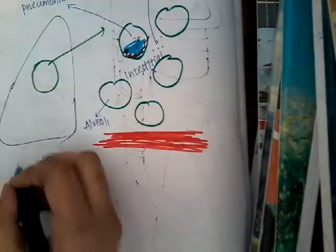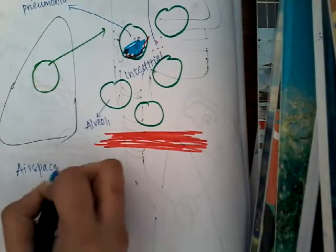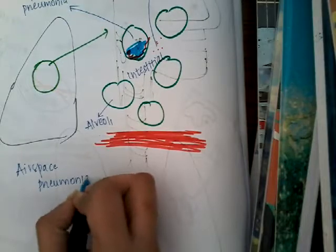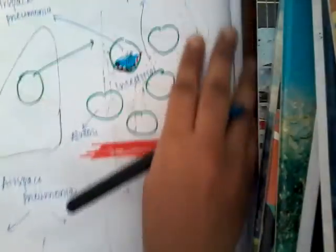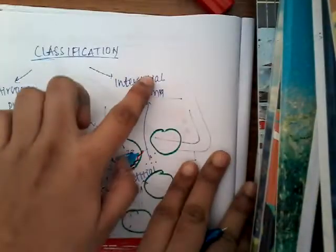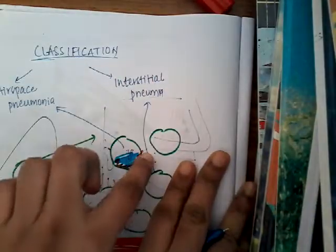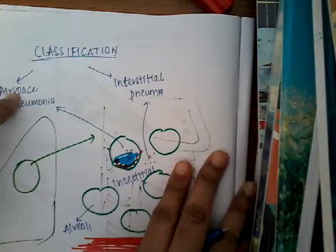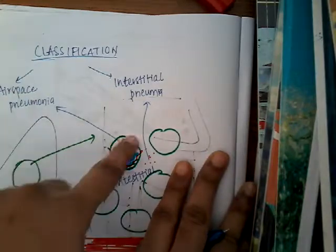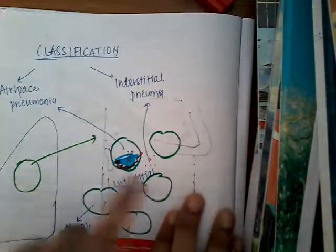Airspace pneumonia can again be divided into two types. In airspace pneumonia, the air spaces — that is the alveoli — are involved. In interstitial pneumonia, the alveoli are not involved, only the interstitium is involved. Whereas in airspace pneumonia only the alveoli are involved, not the interstitium.